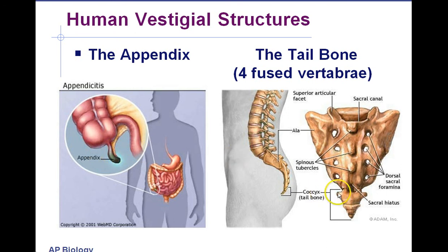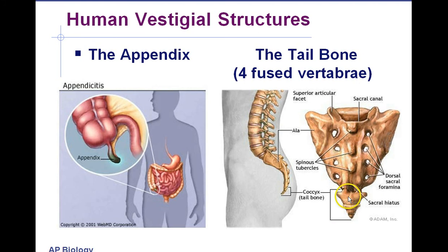Our human tailbone is not one bone — it's actually four fused vertebrae together. We think these four fused vertebrae correspond to the tail vertebrae of our ancestors, and they match up with the bones of animals that have tails. So our tailbone and the appendix are human vestigial structures — remnants from a different time.